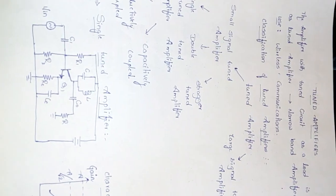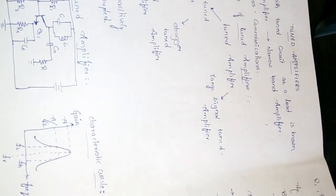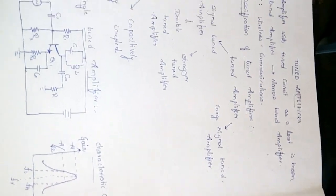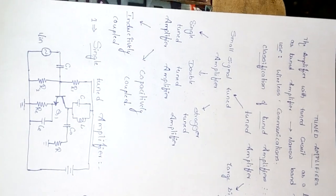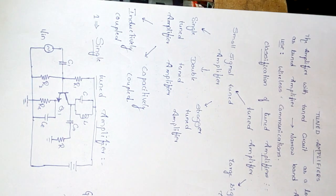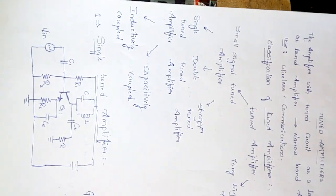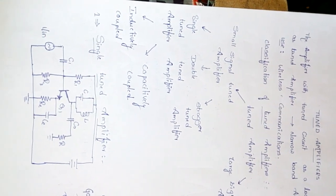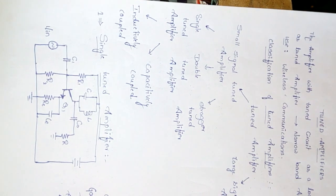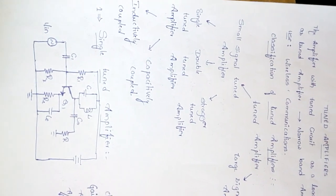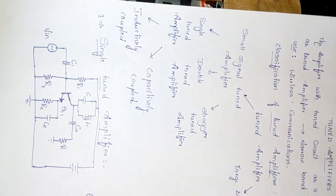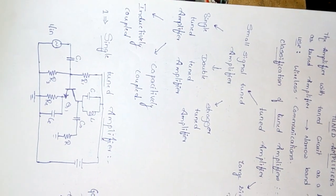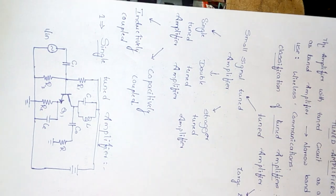Classification of tuned amplifiers: tuned amplifiers are classified into two types: small signal tuned amplifier and large signal tuned amplifier. Small signal tuned amplifiers are used for amplifying small signals at radio frequency. These are operated in Class A mode, whereas distortion is less.